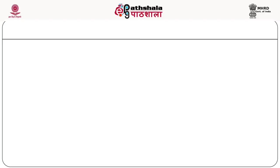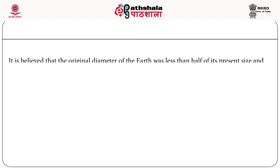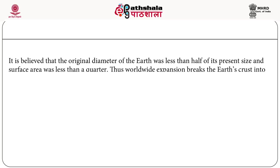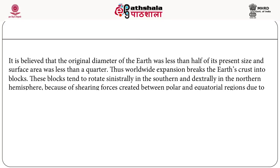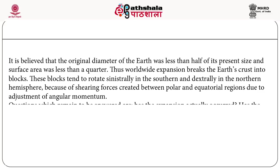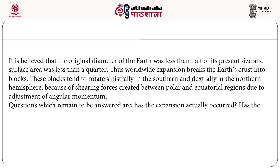The expansion hypothesis proposes that the original diameter of Earth was less than half of its present size, and the surface area was less than a quarter. Worldwide expansion breaks the Earth's crust into blocks. These blocks tend to rotate sinistrally in the southern hemisphere and dextrally in the northern hemisphere, because of shearing forces created between polar and equatorial regions due to adjustment of angular momentum. Questions that remained unanswered include: has expansion actually occurred, and has ocean water remained constant in volume?